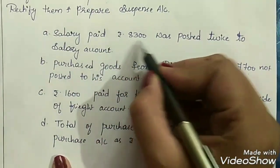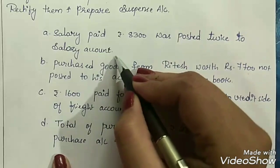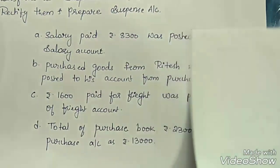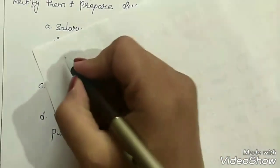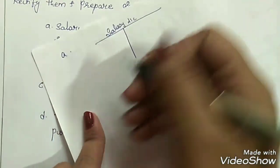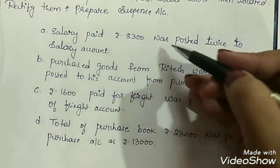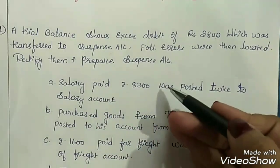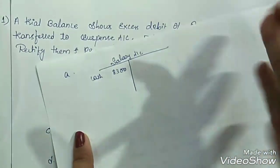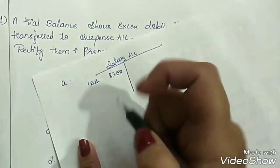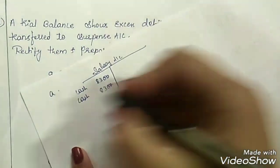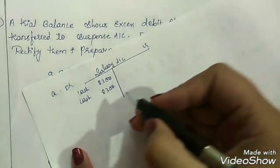The first transaction: salary paid rupees 8300 was posted twice to the salary account. This is an error — posting twice will affect the trial balance. The correct journal entry is salary account debit to cash account. Salary is an expense so it is debited, and we pay cash rupees 8300. But here by mistake it has been recorded again as rupees 8300.